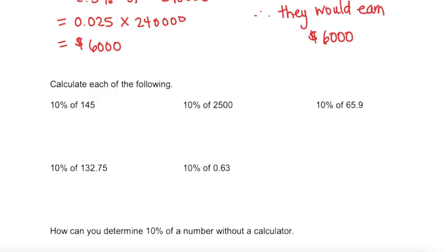And lastly, let's calculate some things that we might be able to do in our head after this. So 10% of 145. This is the same as taking 0.10. So I'm moving that decimal place two spots to the left, times 145. Which works out to be 14.5.